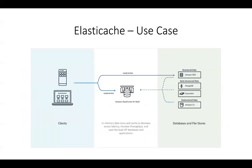This last slide wraps things up. Clients connect to ElastiCache for Redis, which reads and writes data from unstructured databases such as Amazon S3, semi-structured data such as MongoDB or Cassandra, or structured data such as Amazon RDS. While data is returned from RDS, it gets written into ElastiCache for Redis. All subsequent reads and writes go to ElastiCache for Redis first, and only if data is absent does it hit the respective data store — RDS, MongoDB, Cassandra, or Amazon S3.